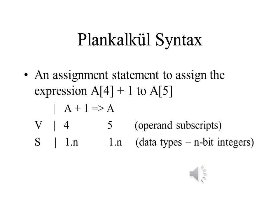The first line indicates that we are adding 1 to a value in the array A and storing it in the array. The second line shows that the subscripts for the two operands are 4 and 5 respectively, and that they are both n-bit integers. The language looks almost hopelessly clumsy by the standards of today, but it is important to remember that this was designed 12 years before Fortran and 24 years before C.